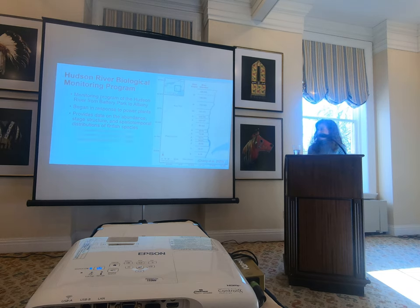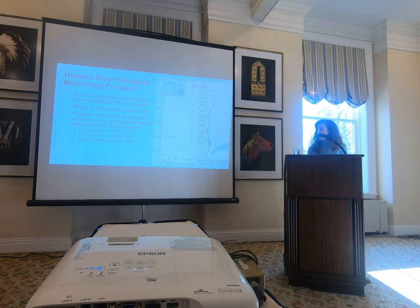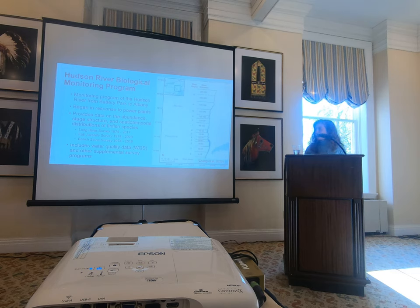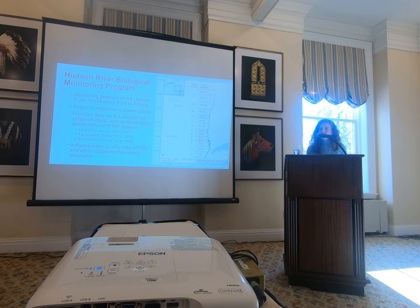It does so through three main components: the Larval River Survey, the Beach Seine, and the Fall Juvenile Survey. I'll be focusing on data from the Larval River Survey. It also includes water quality data from the Water Quality Survey and a couple of other supplemental survey programs. This figure, from Chang et al. 2023, is a map of the Hudson River estuary divided into the 13 different regions sampled by the HRBNP.